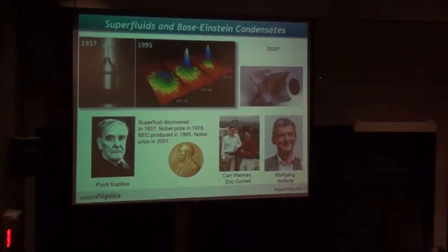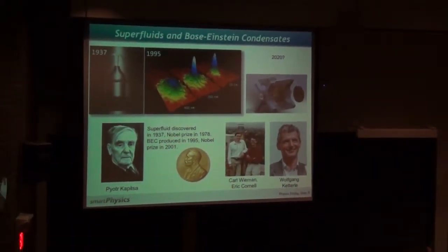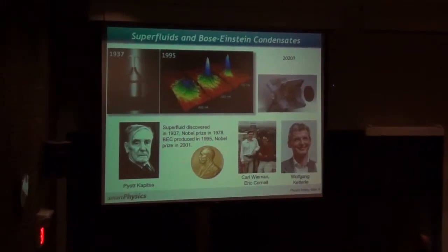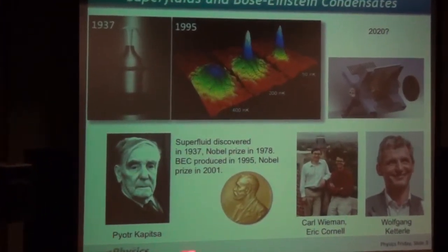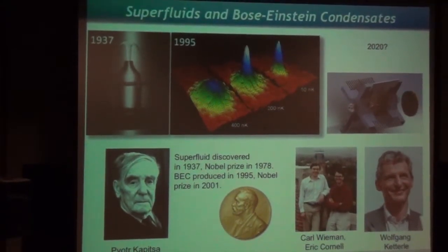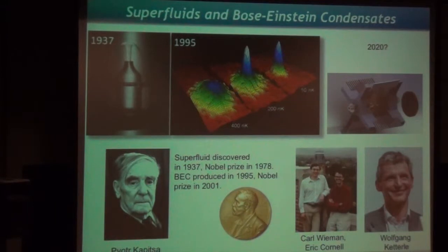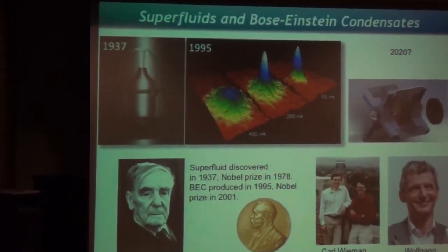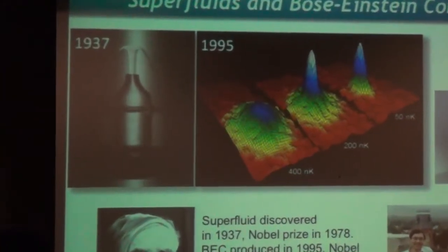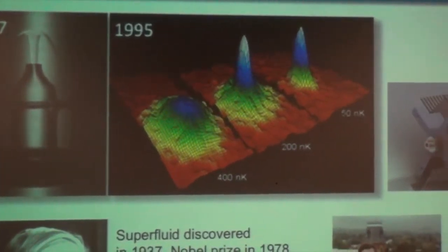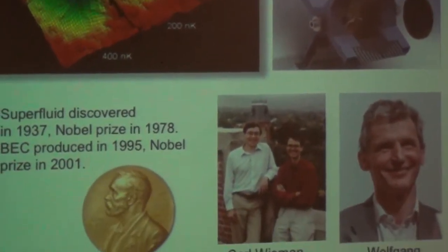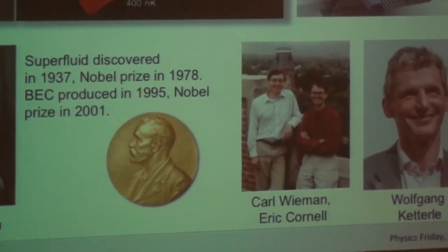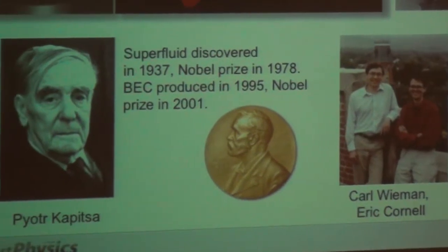So superfluids and Bose-Einstein condensates. This is a more exotic state of matter. Quantum mechanics comes into play very strongly here. So basically the superfluid state of helium-4 was first discovered in 1937, and Peter Kapitza got a Nobel Prize for it. This is basically bosons. Bosons are particles that have integer spin, and they have Bose symmetry, which means they can basically all be in the same place at the same time. So two electrons cannot be in the same place at the same time. Bosons can.